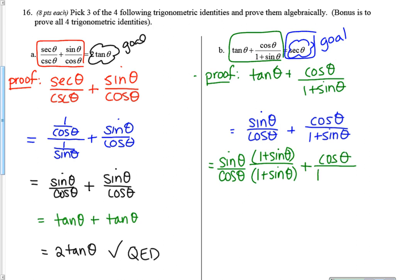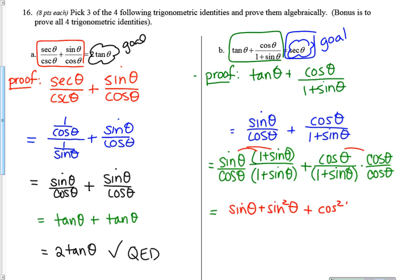I need to put a one plus sine on both top and bottom of the first fraction, and a cosine on the top and bottom of the second fraction. Simplifying: on the top of the first fraction I have sine times one plus sine, so distributing gives sine plus sine squared. The second fraction's numerator is cosine times cosine, which is cosine squared. On the bottom I have cosine times one plus sine — I won't distribute this because I'm keeping my goal in mind: I want a cosine on the bottom to eventually get secant.